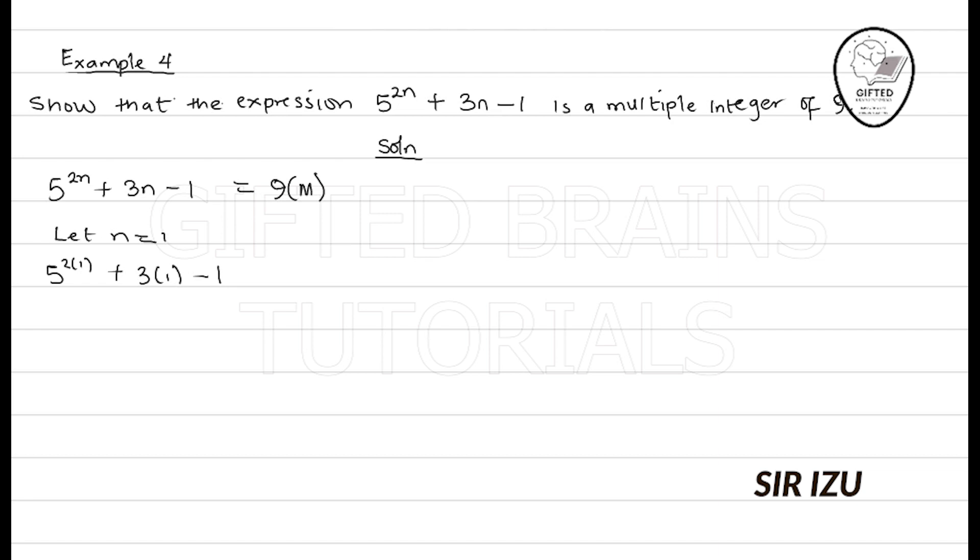So, this will give us 5^2, which is 25. So, 25 + 3 - 1. That gives us 27. And we can see that 27 itself is a multiple of 9, 9 times 3.